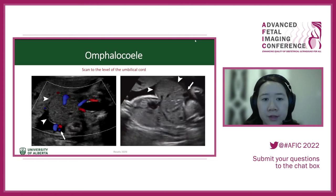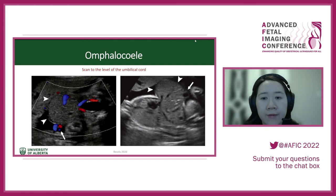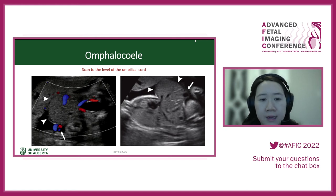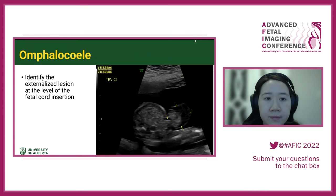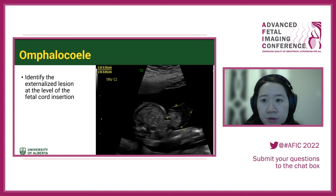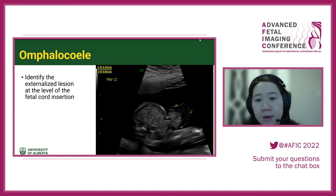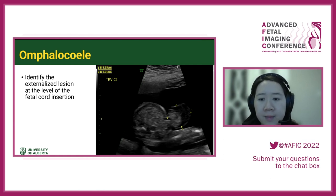When looking at omphalocele, scan down to the level of the umbilical cord and identify where the cord is coming from. On the left image, the arrow indicates the umbilical cord, and the arrowheads indicate the significant abdominal wall defect. On the right side, a sagittal view shows significantly herniated fetal liver. It's important to identify the externalized abdominal contents at the level of the cord insertion.